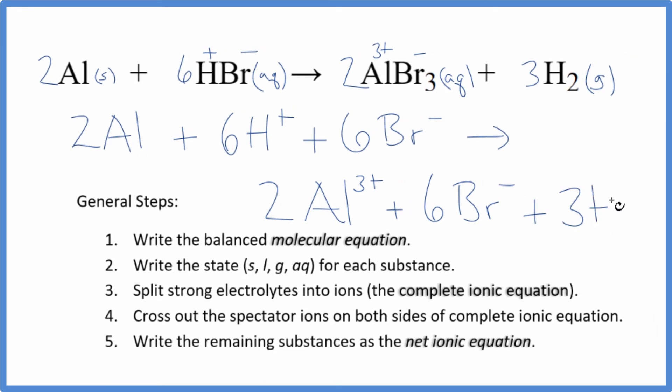So next we can cross out spectator ions—they're on both sides of the complete ionic equation. So in the reactants I can see I have six bromide ions here and six here.